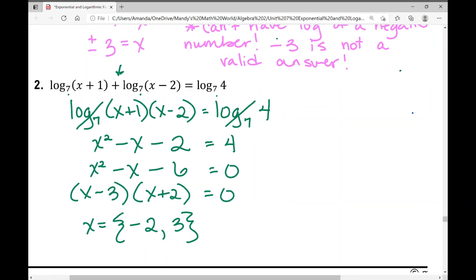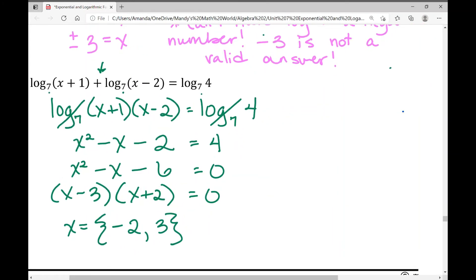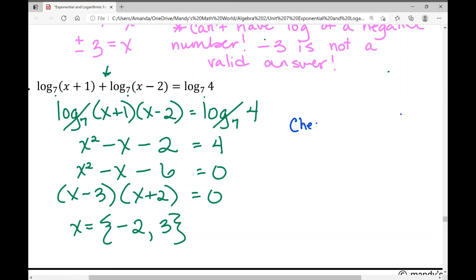I'm going to check for validity. Let's look at that negative 2 first. If I plug in negative 2, I'm going to plug it in this first log. So log base 7 of negative 2 plus 1 equals log base 7 of 4.